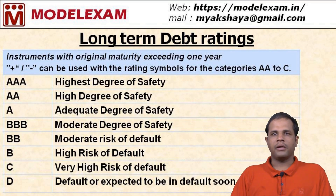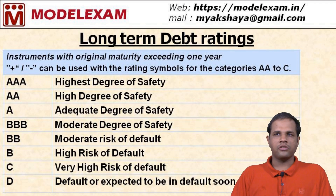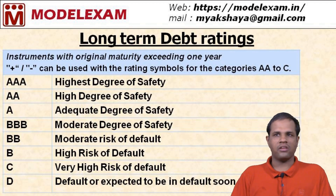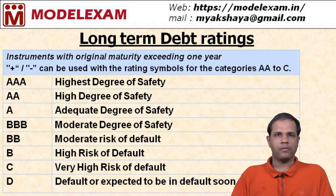Long-term debt ratings. Here, long-term means instruments with original maturity exceeding one year. Plus or minus can be used with rating symbols for the categories from AA to C. These are the categories for long-term debt ratings.